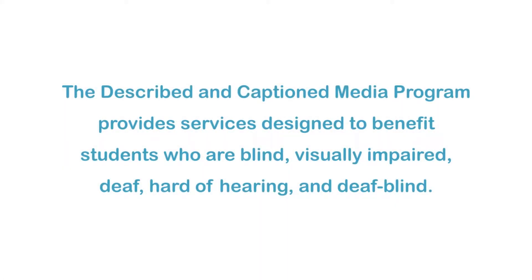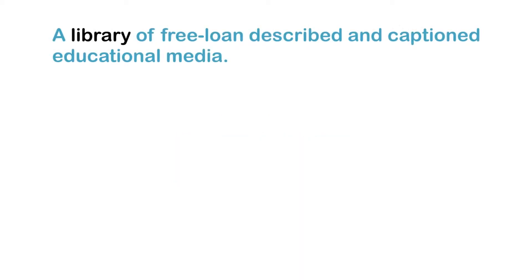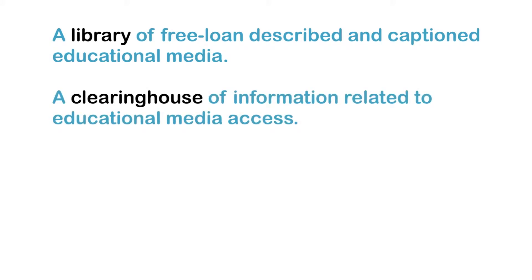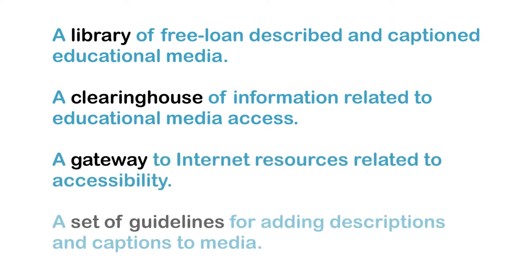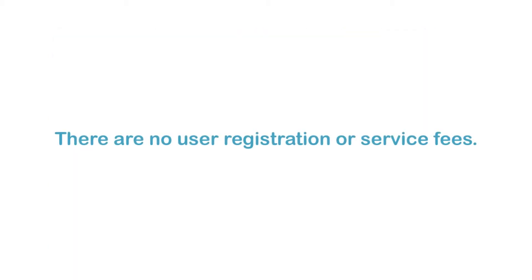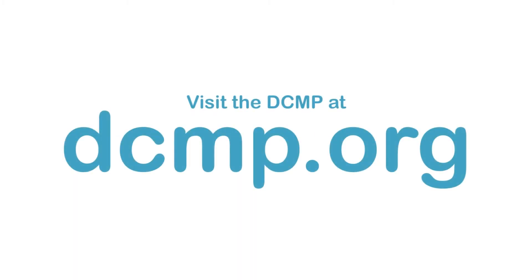The Described in Caption Media Program provides services designed to benefit students who are blind, visually impaired, deaf, hard of hearing, and deafblind. These services include a library of free loan described and captioned educational media, a clearinghouse of information related to educational media access, a gateway to internet resources related to accessibility, and a set of guidelines for adding descriptions and captions to media. There are no user registration or service fees. Visit the DCMP at dcmp.org.